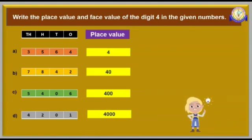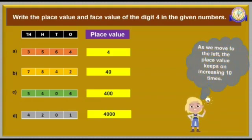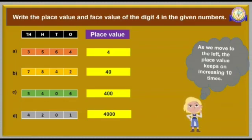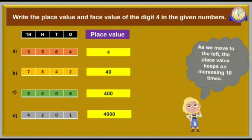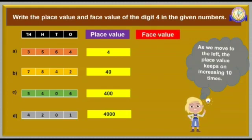By seeing the place value of digit 4 in each number, we will get a pattern. That is, as we move to the left — from the 1's place to the 10's place, or 10's place to 100's place, or 100's place to 1000's place — the place value keeps on increasing by 10 times. But what about the face value of 4? Well, in all the cases, the face value of 4 is 4 only.